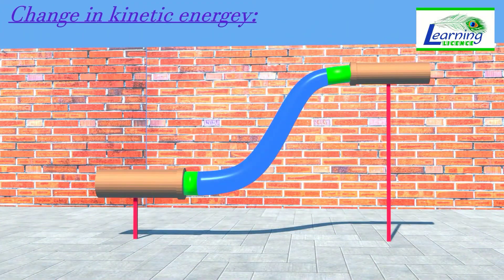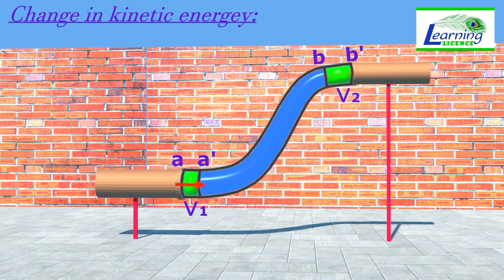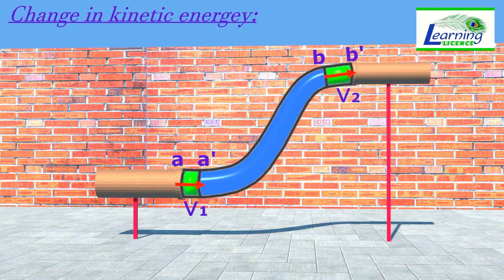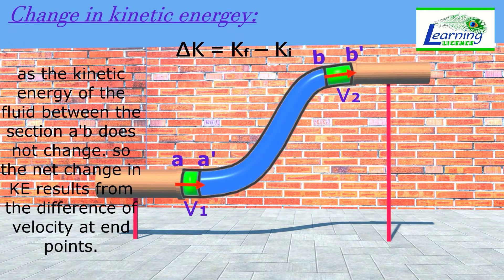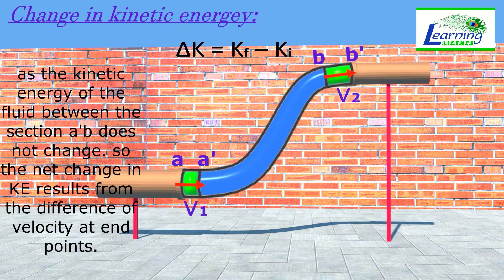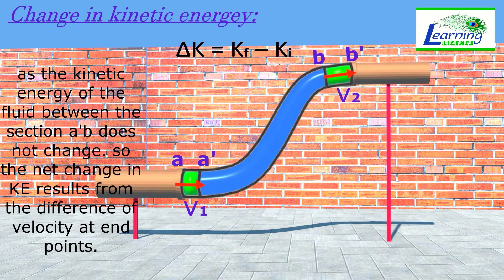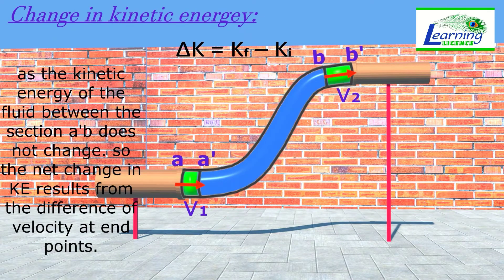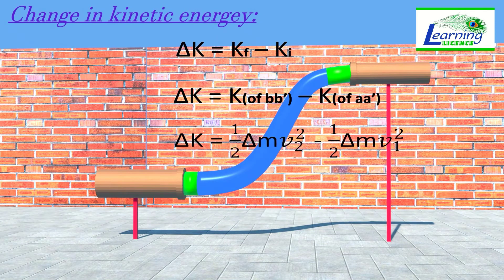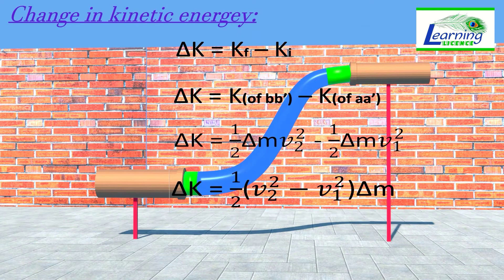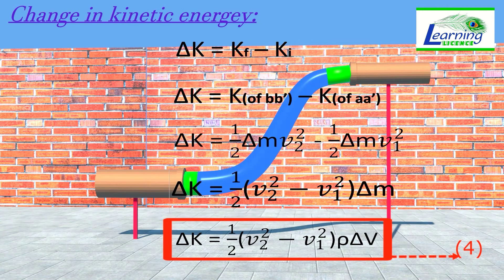And now we calculate change in kinetic energy of fluid section. Fluid has different velocities V1 and V2 at both ends. Change in kinetic energy is difference of final kinetic energy and initial kinetic energy. As the kinetic energy of fluid between the section A dash B does not change, the net change in kinetic energy results from difference of velocities at end points A A dash and B B dash. Put the value of kinetic energy half M V square, and mass del M is rho dot del V. This is final expression for del K, and we call it equation 4.